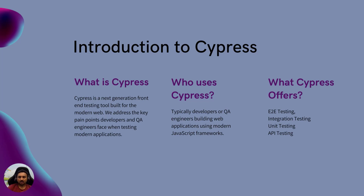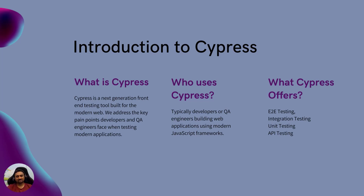As per their documentation, Cypress can be used to automate end-to-end tests. It can also be used to perform integration testing, unit testing, and API testing. So you can think of it as a single umbrella to do all kinds of testing that are important for your application.